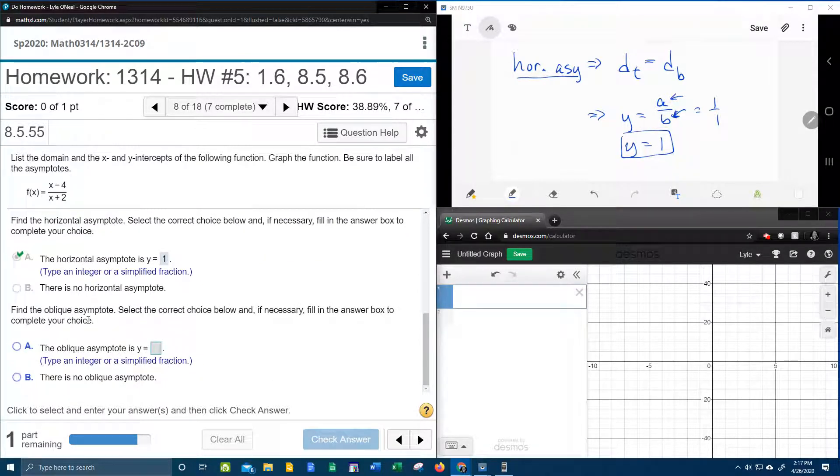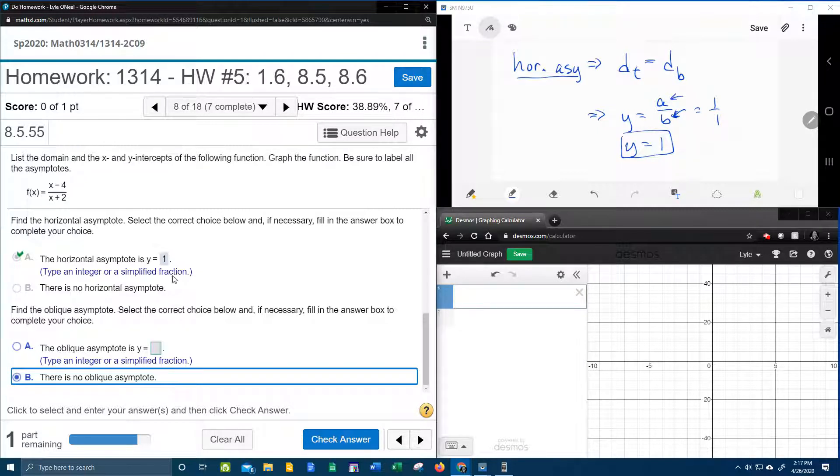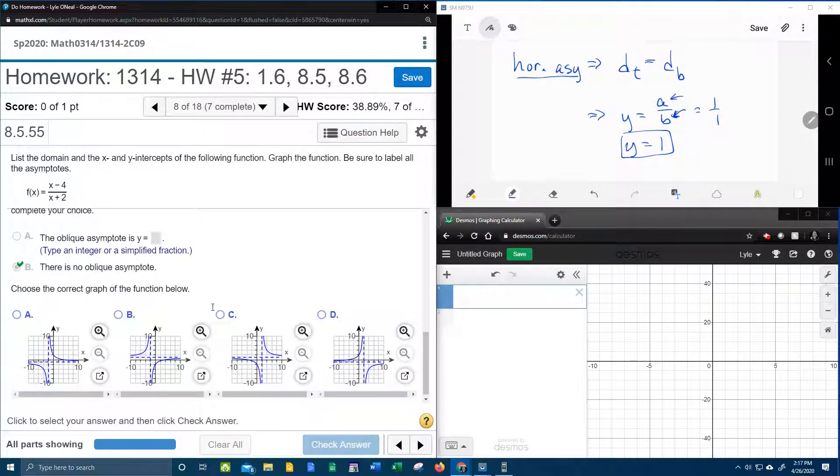Find the oblique asymptote. Alright. So fun fact. If you have a horizontal asymptote, you cannot have an oblique asymptote. It's like one of these exists and the other one doesn't. So if you don't have a horizontal asymptote, then you could have an oblique. And if you do have a horizontal asymptote, then you can't have an oblique.